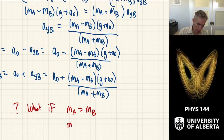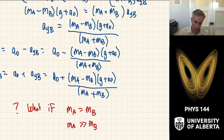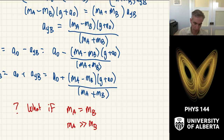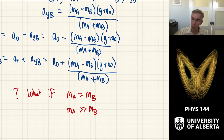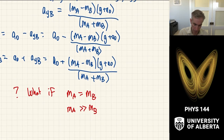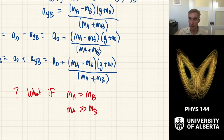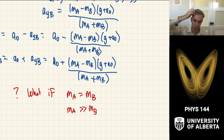Another limit: what if m_A is much greater than m_B? Then m_A dominates, so (m_A minus m_B) ≈ m_A and (m_A plus m_B) ≈ m_A, and these cancel. Object B would rocket upward and object A would essentially free-fall downward. That also makes sense and illustrates the care needed by analyzing this in the inertial reference frame.